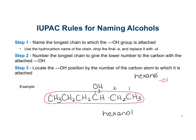So: one, two, three. If we numbered from the other side it would be a four, so we want to give the functional group the lowest number. This would be 3-hexanol, or sometimes you're going to see this written as hexan-3-ol. Those are synonyms for each other - both ways are okay to name.